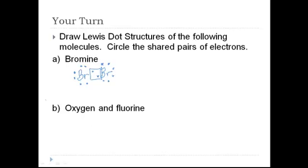Oxygen and fluorine. Oxygen has six because it's in group 16, so it really just needs two more. Fluorine has seven and just needs one more. So fluorine and oxygen are going to share a pair, but oxygen still needs one more. So it's going to find another fluorine with another seven valence electrons and share a pair with that fluorine.